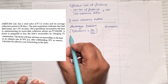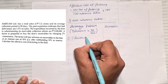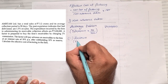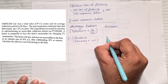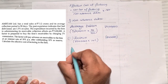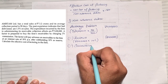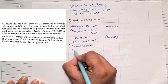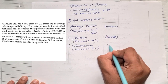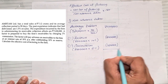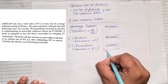From average debtors, we first minus the reserves. The reserve given is 10%, so 80 lakhs into 10% equals 8 lakhs — less 8 lakhs. After that, less commission: commission is 2%, so 80 lakhs into 2% equals 1 lakh 60,000. So 80 lakhs minus 8 lakhs minus 1 lakh 60,000 gives a balance of 70 lakhs 40,000.